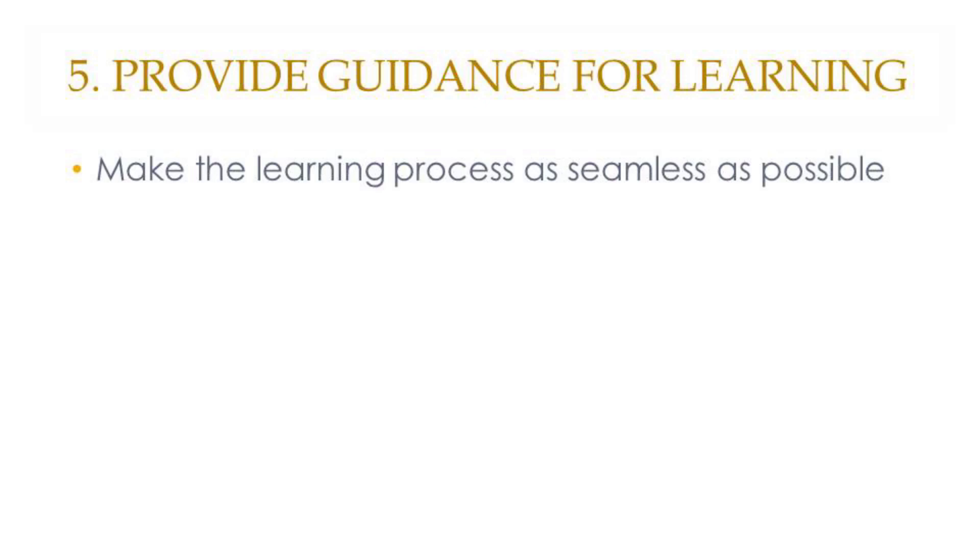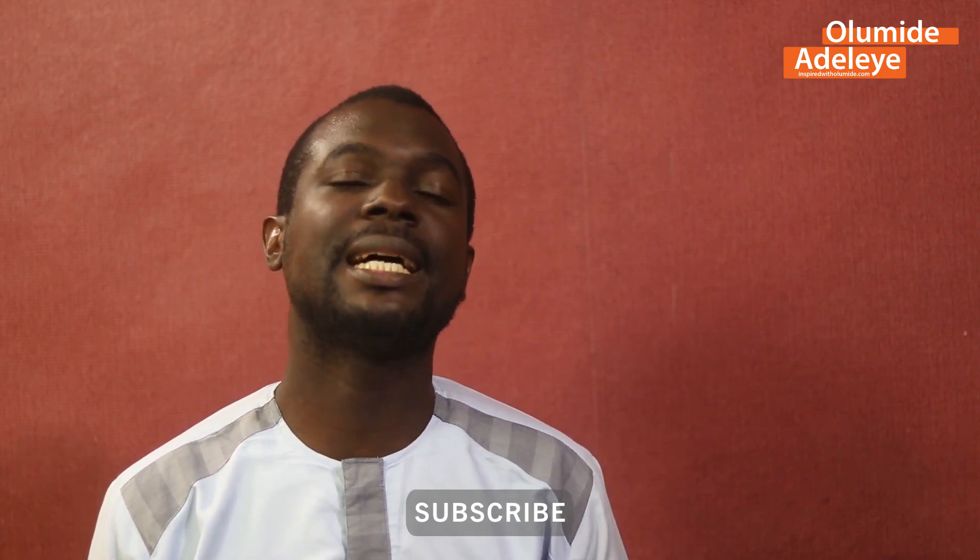Number five is to provide guidance for learning. Oftentimes people are hindered from learning — not because there's a problem with the knowledge or the teaching itself — but because everything around it is cumbersome, complicated, or not straightforward. You want to make sure that the things surrounding your learning are as easy to use as possible and that your learner can understand them very well. So you want to look at elements like your UI. If it is e-learning, look at your user interface: is it friendly, is it intuitive? Can learners just look at it and know what next to do, what to click on, and how to access questions and guides?